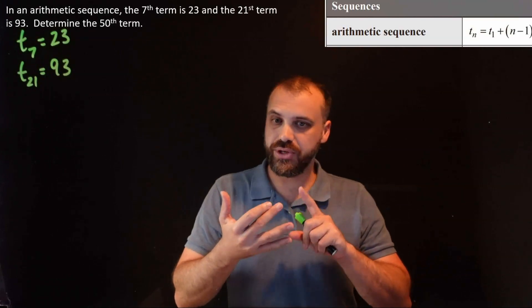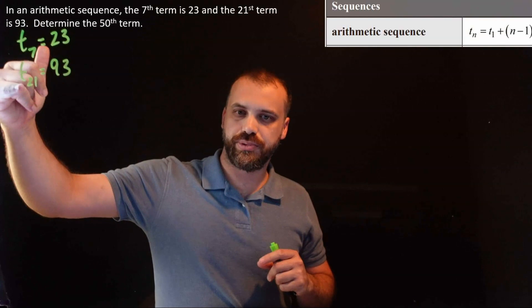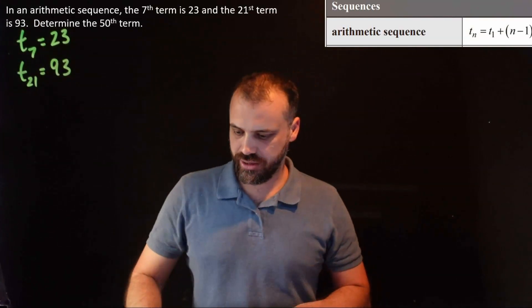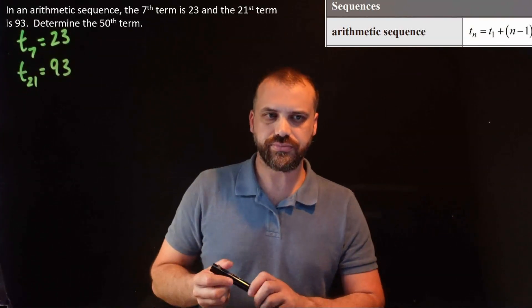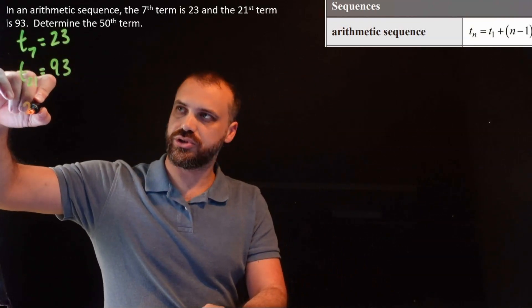We don't know the first term and we don't know the common difference either. Let's put these two pieces of information into some equations here. So first of all, term 7 is equal to 23.